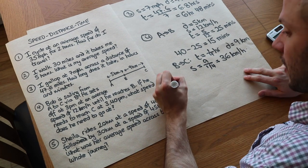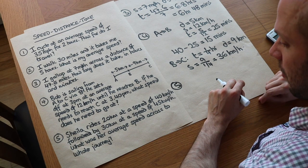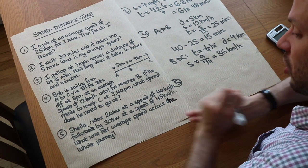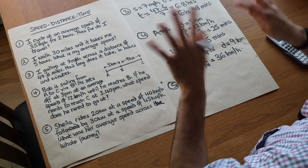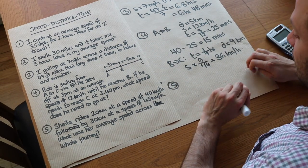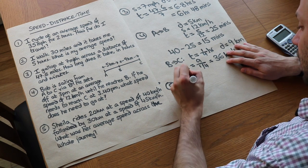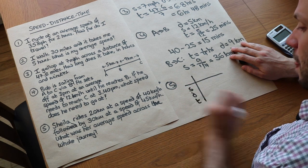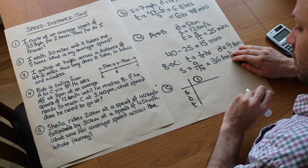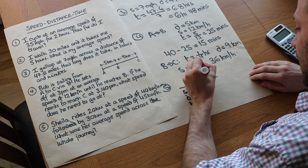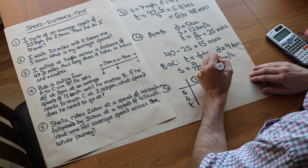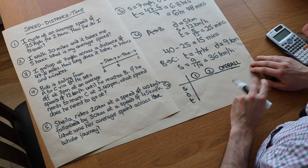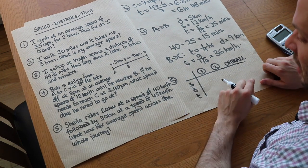Finally, question 5. Sheila rides 20 kilometres at the speed of 40 kilometres per hour, followed by 30 kilometres at the speed of 45 kilometres per hour. What was her average speed across the whole journey? We've got two different parts of the journey here with different speeds and different distances. What I find really helpful to do is put everything into a table. So we've got rows for speed, distance, time. Then we've got the first leg of the journey where she's going 20 kilometres at 40 kilometres per hour. Then the second leg of the journey. And then we've got overall, because we're trying to find her average speed across the whole journey.